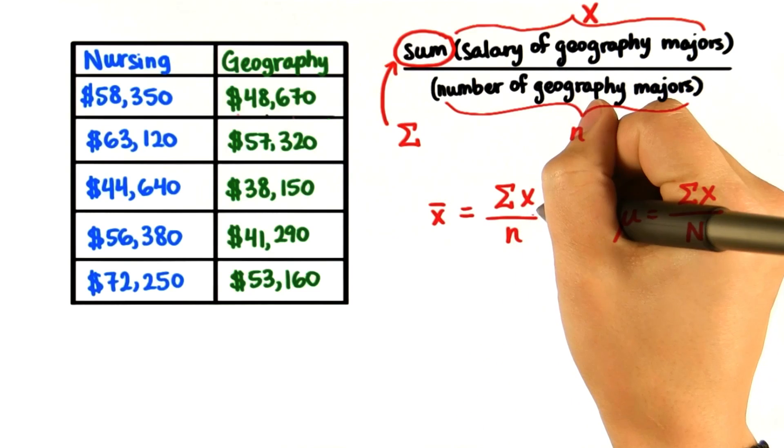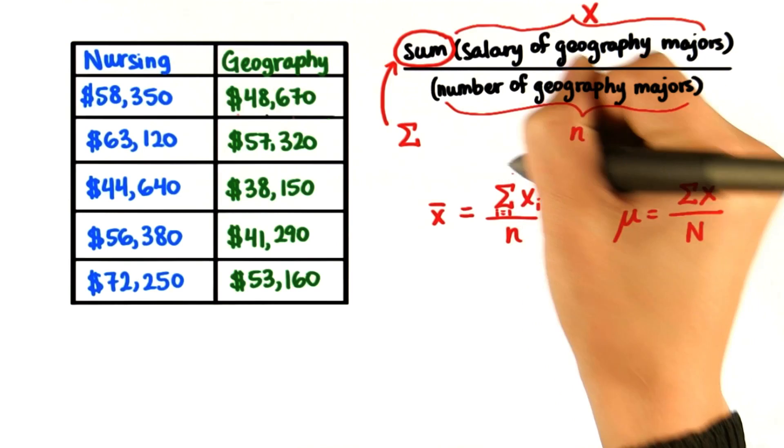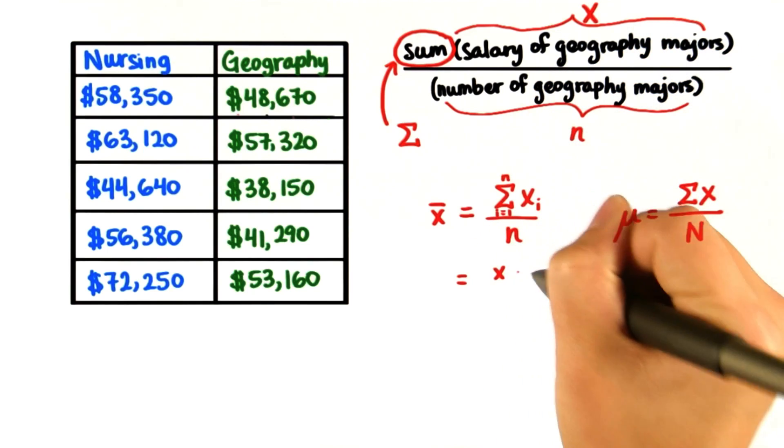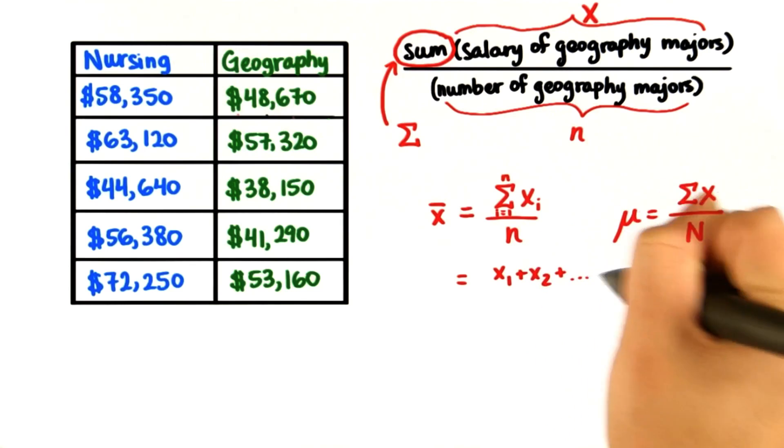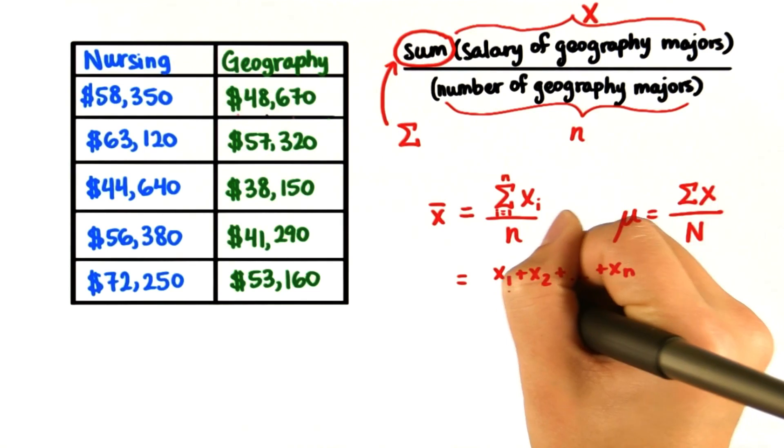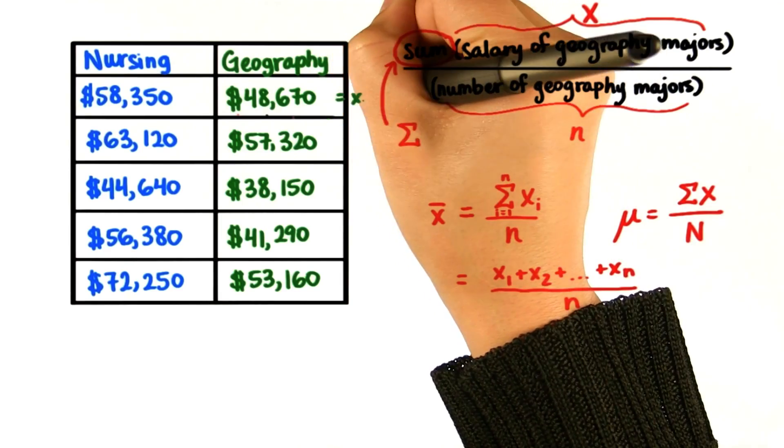And actually, sometimes there will be a little i here. And this is going from i equals 1 to n, meaning that we sum x1 plus x2 all the way to xn.